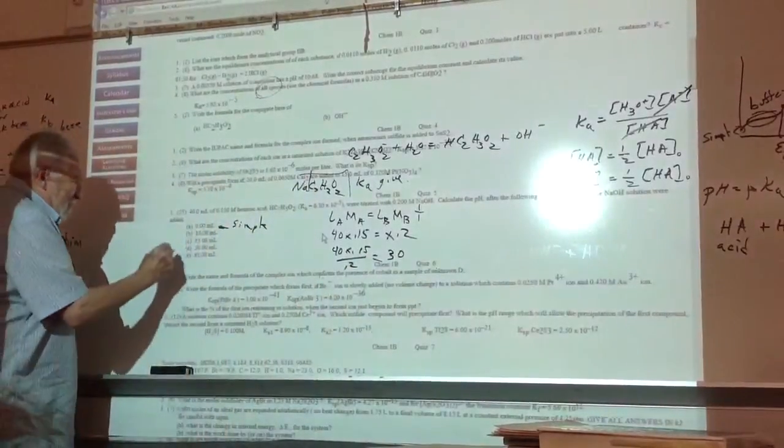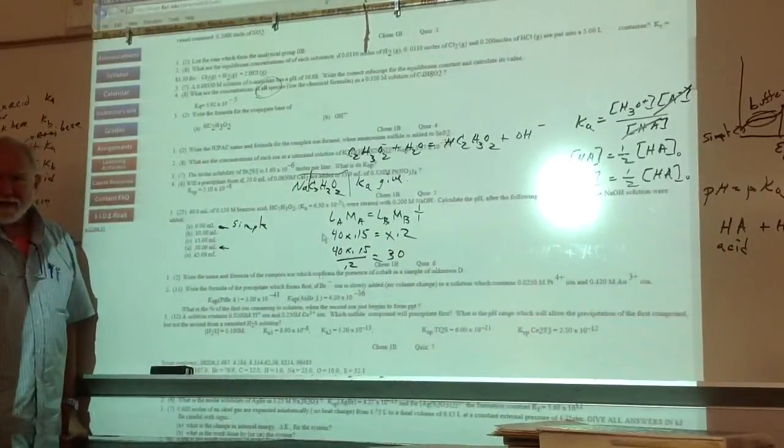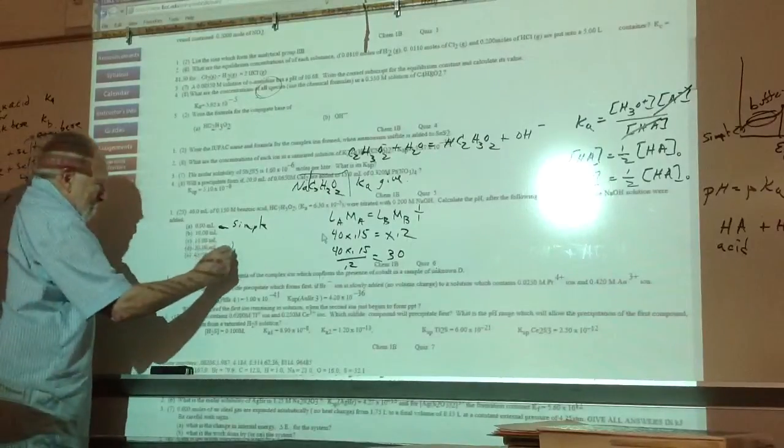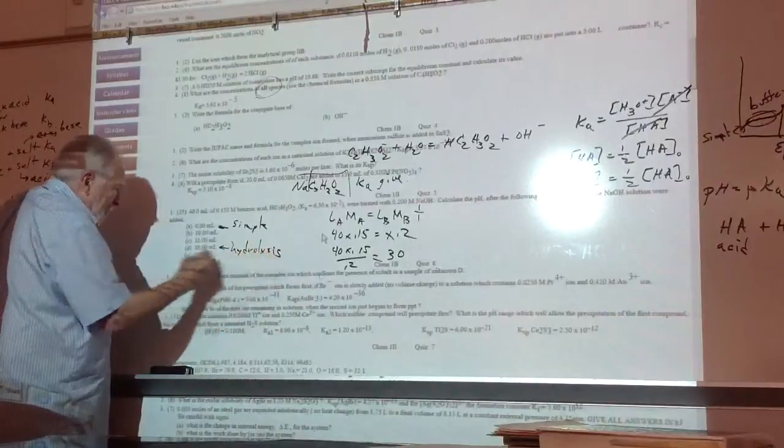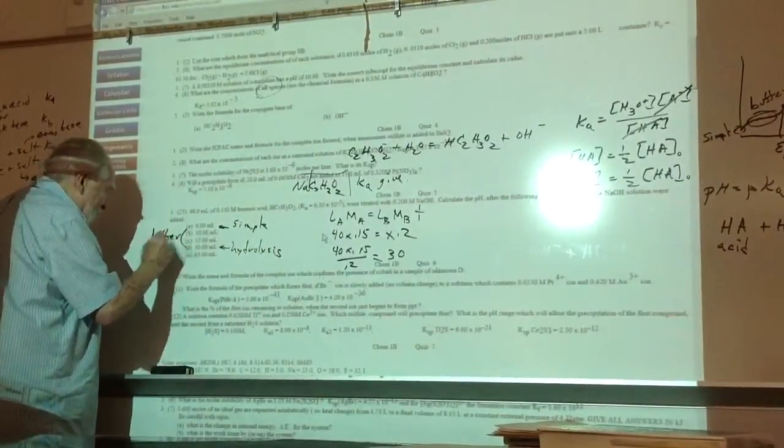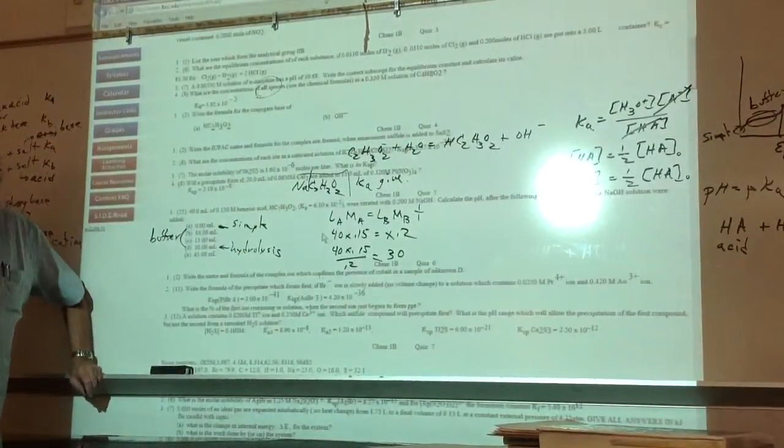So there's the equivalence point. Now, what problem do you do with the equivalence point? This is the problem we just talked about. And in between... buffer? And notice there's the half-equivalence point. What did I say about the half-equivalence point?